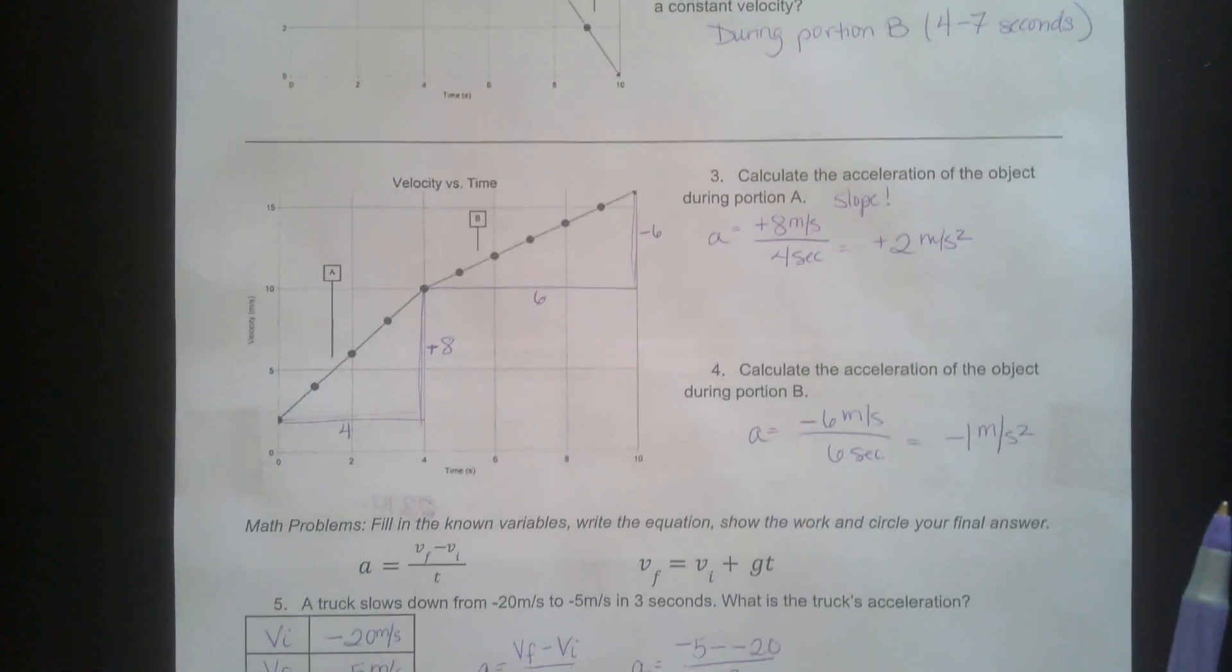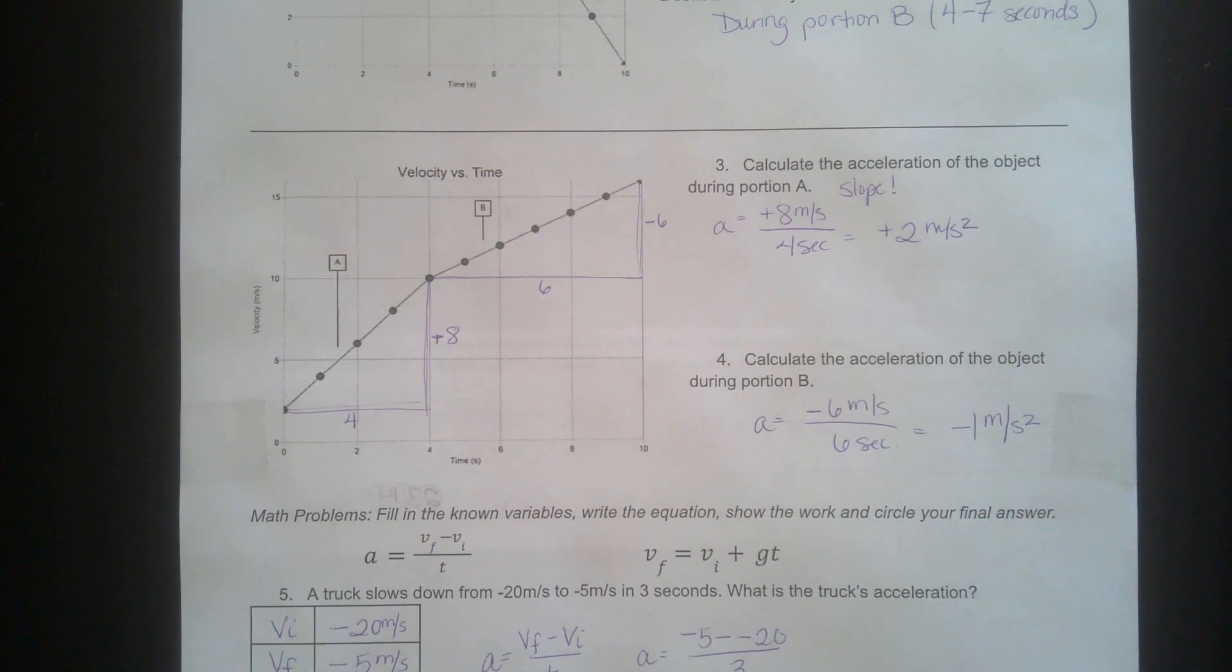Questions 3 and 4, you just have to calculate slope again. For number 3, portion A, you're looking at a change of 8 in 4 seconds. So that slope would be positive 2 meters per second squared.